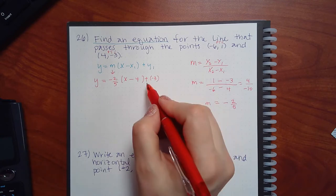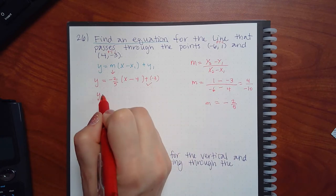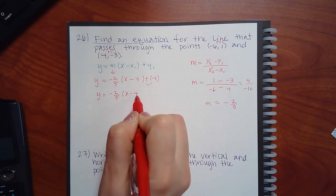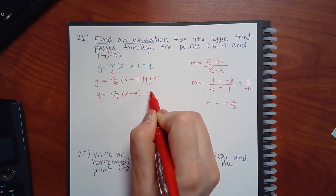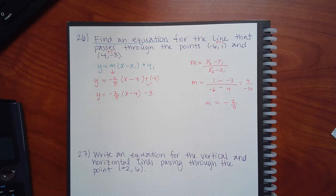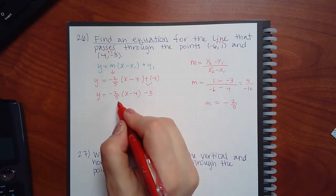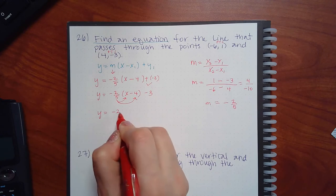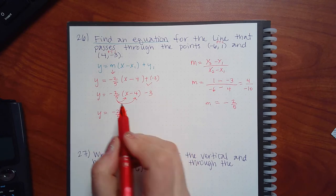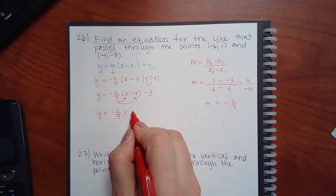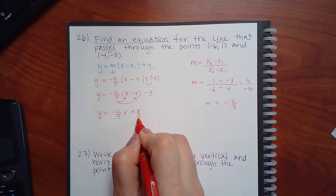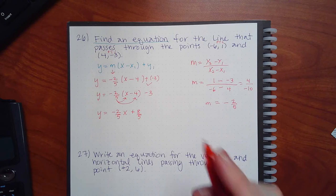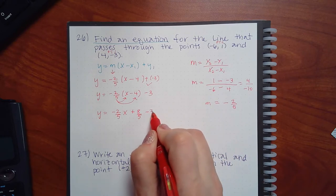So I'm going to use x = 4 and y = negative 3. I do have a double sign, so I'm going to fix my double sign before I distribute — I do not like to distribute with double signs. I'll turn that to a minus, then distribute. We get negative two-fifths x, and then negative times a negative gives positive eight-fifths. You can type negative two-fifths times negative four in a calculator — it's positive eight-fifths, minus three.